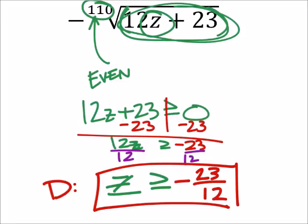Which is okay, because if I put z as negative 23 twelfths, right, so that's 12 times negative 23 twelfths, and then I would add the 23.